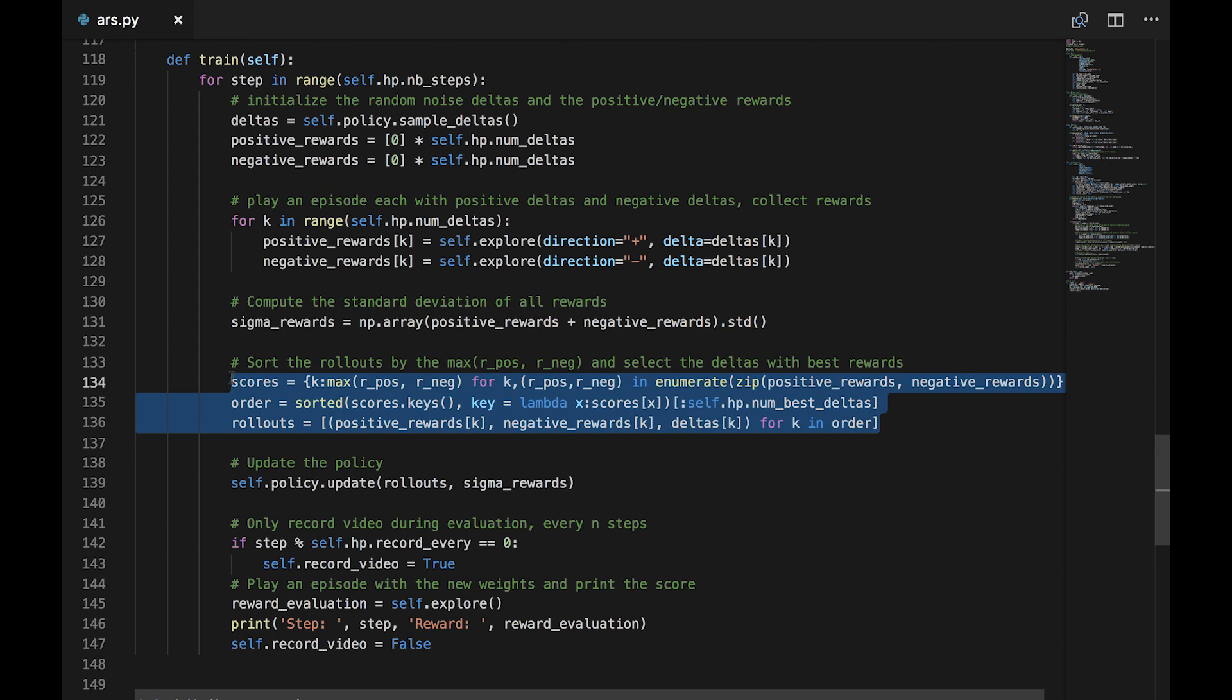We create a list of rollouts with the positive rewards, the negative rewards, and the delta applied. We update the policy using the rollouts generated and calculated standard deviation of the rewards. Finally, we play one episode with the updated weights and print the score.